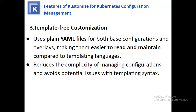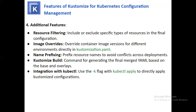The next feature is template-free customization, which uses plain YAML files for both base configuration and overlays, making them easier to read and maintain compared to templating languages. This reduces complexity and avoids potential issues with templating syntax. Additional features include resource filtering — include or exclude specific types of resources — image overrides to override container image versions for different environments, name prefixing to avoid conflicts across deployments, and the kustomize build command for generating the final merged YAML.